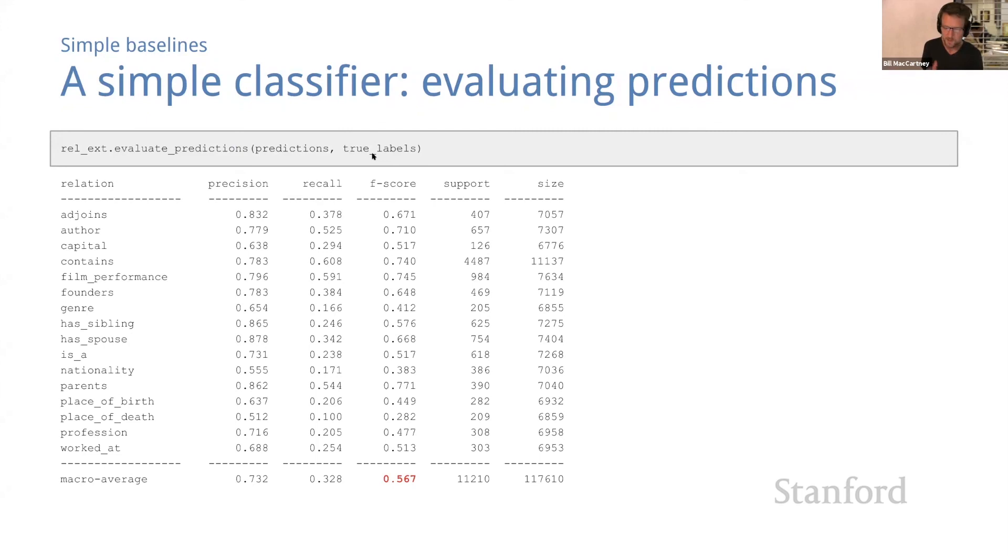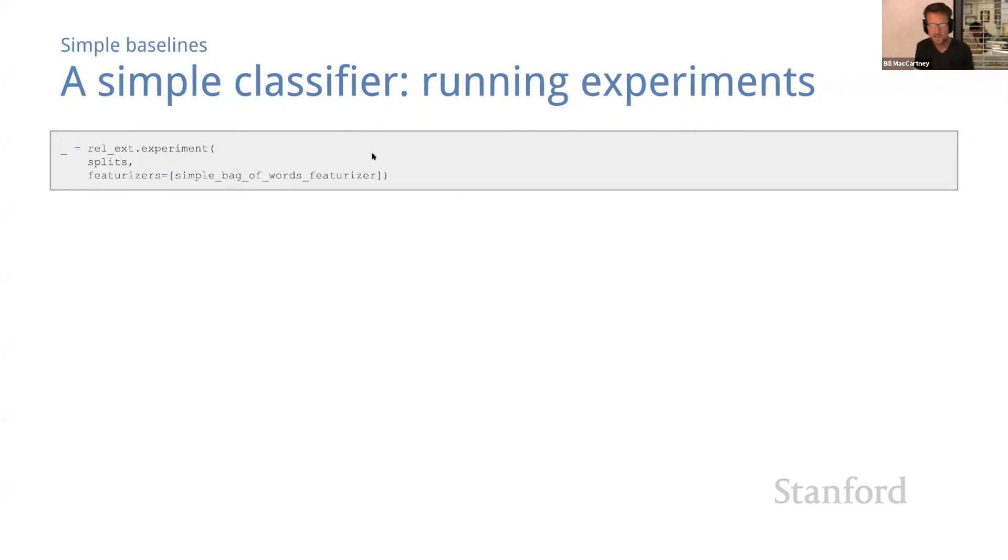Now before we dwell on these results, I want to show one more function, which is a function called experiment. Experiment simply chains together the three functions that I just showed you. It chains together training, prediction, and evaluation. So that's very convenient for running end-to-end experiments. I haven't shown all the parameters here, but if you go look at the source code you'll see that it actually takes a lot of optional parameters. And those parameters let you specify everything about how to run the experiment.